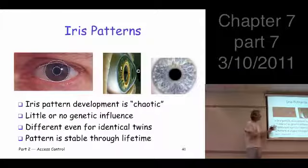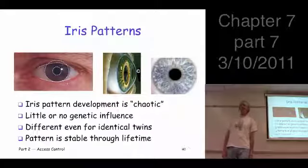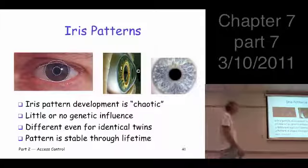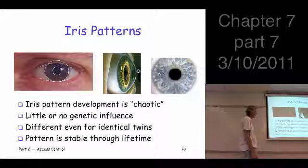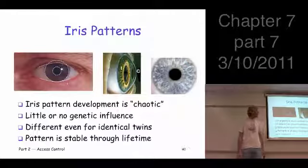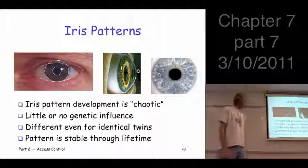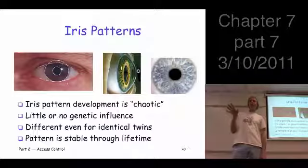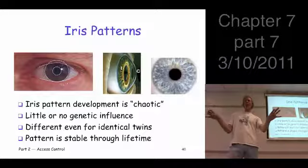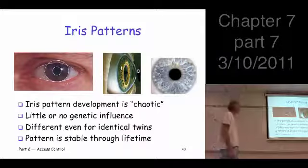The Cadillac system of biometrics, in principle, has the best equal error rates - the iris scheme. The iris is the colored part of your eye here, and there's essentially no genetic influence at all. It's considered a chaotic process. Identical twins would have completely uncorrelated iris patterns.